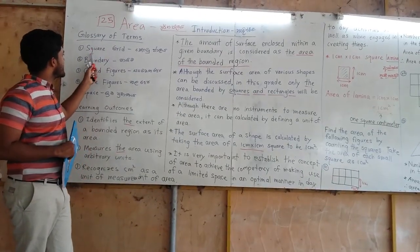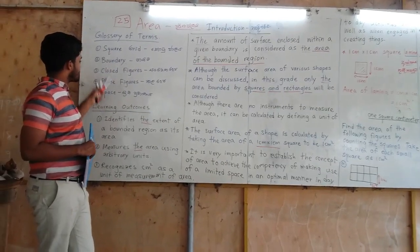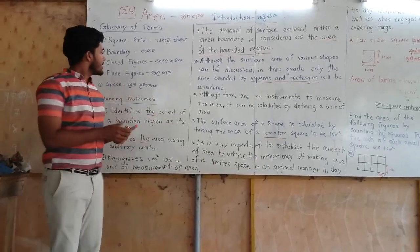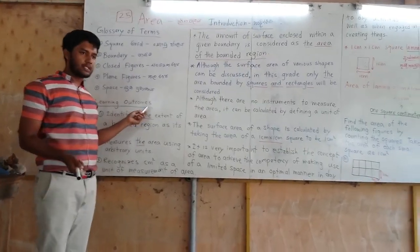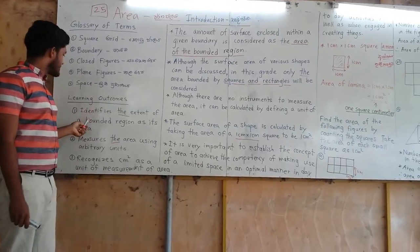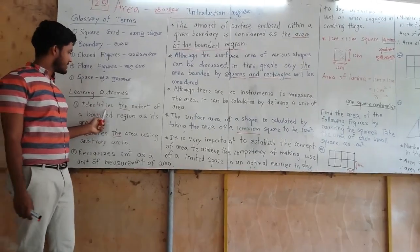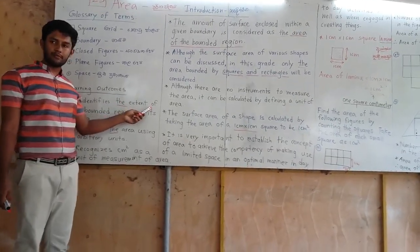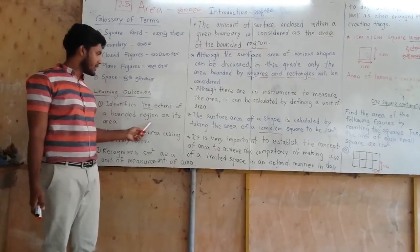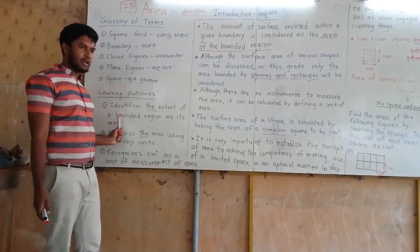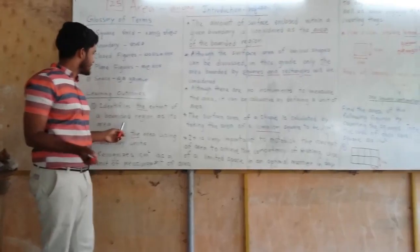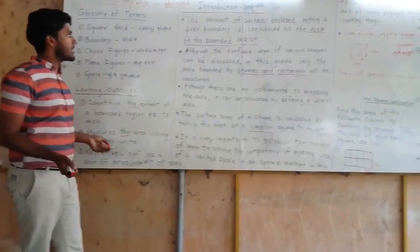You have the glossary of terms here, right? You have the glossary of terms in the single meaning, right? There are learning outcomes in this lesson. Can you see the learning outcomes? Yes. What is the first one? Identifies the extent of the bounded region as the area. We are going to get the area of the bounded region. There are other learning outcomes also.